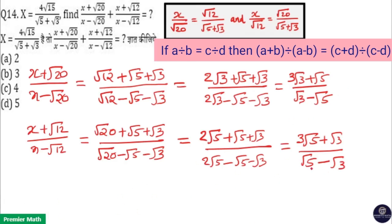Here the first term has denominator √3 - √5, while the second has denominator √5 - √3. So I take minus outside to make them common: the first term becomes minus(3√3 + √5) divided by (√5 - √3).